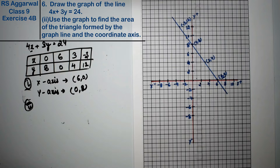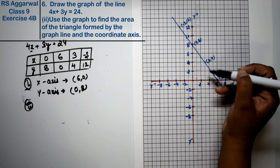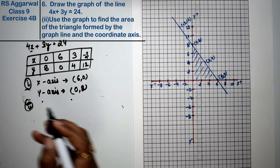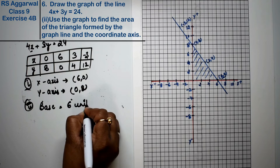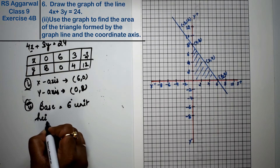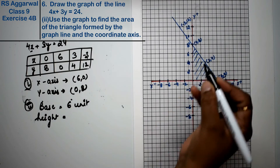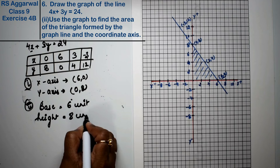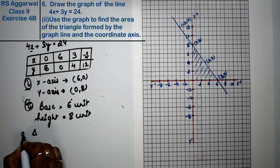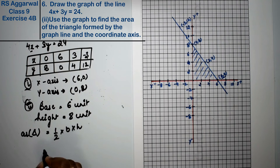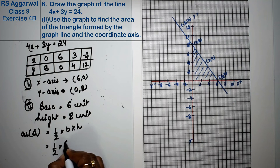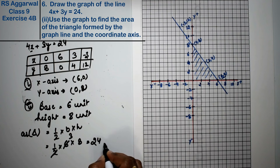Using this graph to find the area of the triangle formed by the graph line and the coordinate axes: the base is 6 units along the x-axis, and the height is 8 units along the y-axis. Area of triangle equals half into base into height, that is half into 6 into 8, which gives 24 square units.